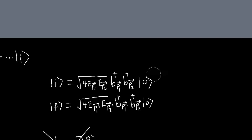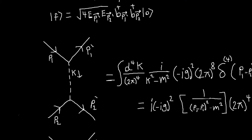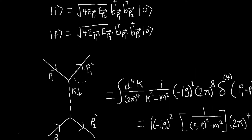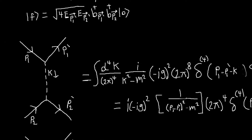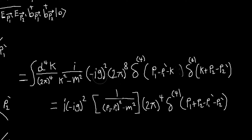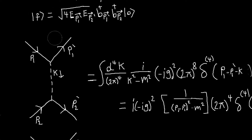Then we can look at the next example we did, which was two B particles scattering off each other. The Feynman diagrams look like this. Now we have two vertices, so we're going to have two factors of minus ig and (2π)^4 and two delta functions. But we also have this internal leg — whenever you have an internal leg, you also have this factor of the propagator.